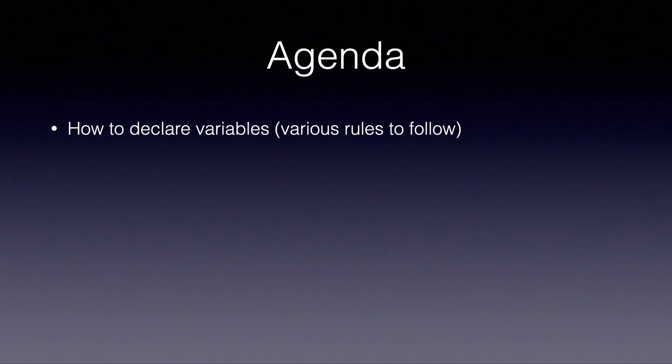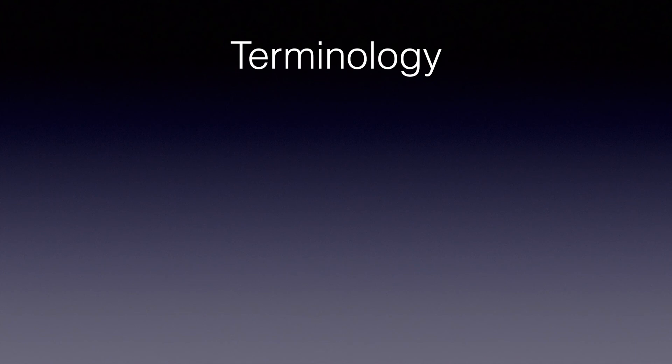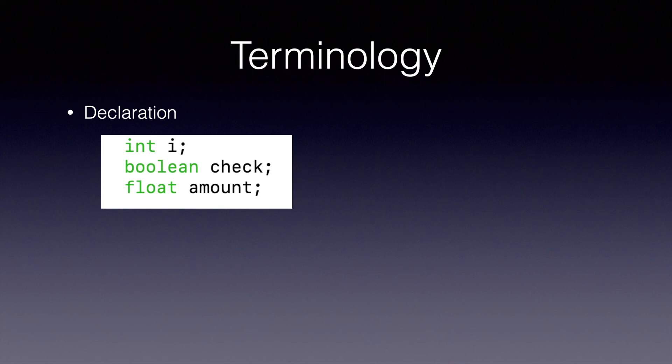Before we jump into the naming rules, I just want to reiterate some terminology. I have been using it already and I will be using it in future videos as well, so it's definitely worth reiterating. The first term is declaration. Declaration is a statement where we tell Java that we are going to use a variable. In that statement, we give it a variable name and also the type of information that variable will store. So in this example, I have three variables declared: i, Jack, and amount, and the types of those variables are int, boolean, and float respectively.